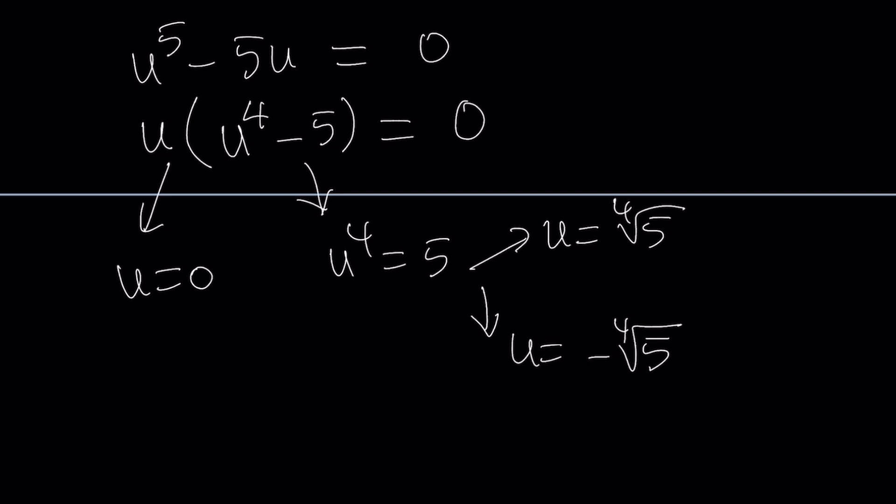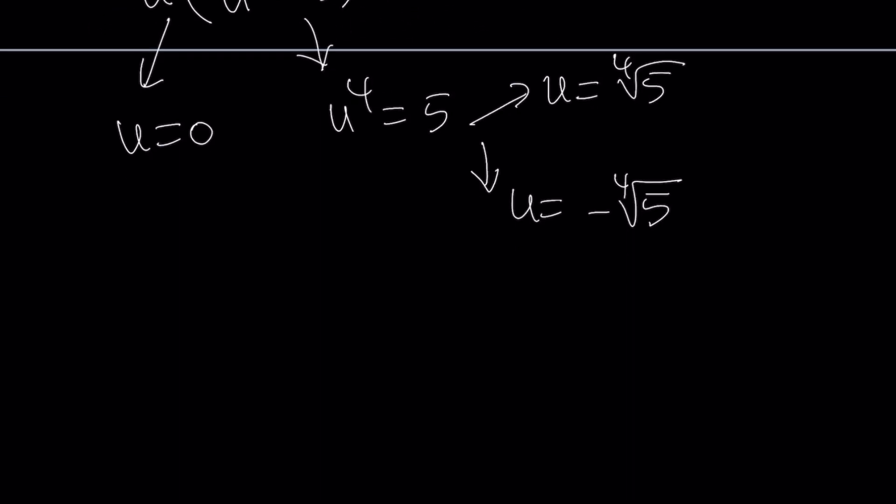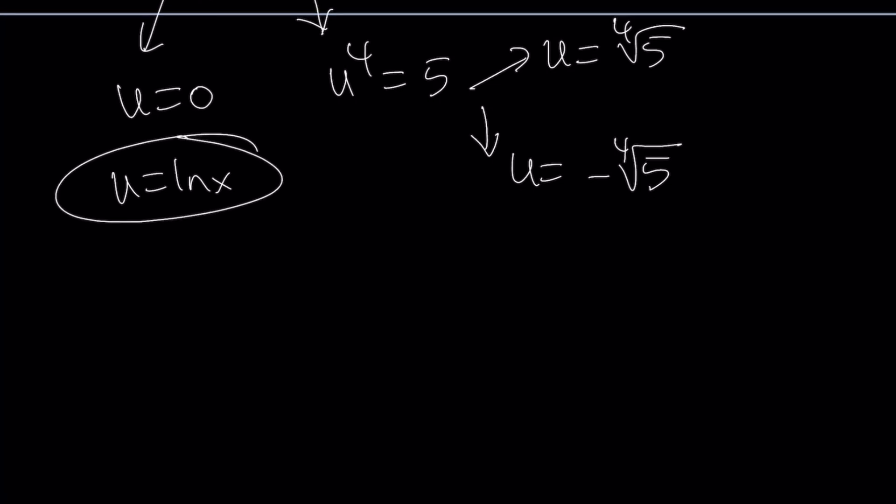But u is ln x. So let's go ahead and set each of these equal to ln x. We know that u is equal to ln x, right? So now ln x equals 0 gives you x equals 1.